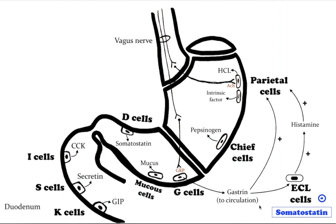Enteroendocrine cells are specialized cells of the gastrointestinal tract with endocrine function. They produce gastrointestinal hormones or peptides in response to various stimuli and release them into the bloodstream for systemic effect.